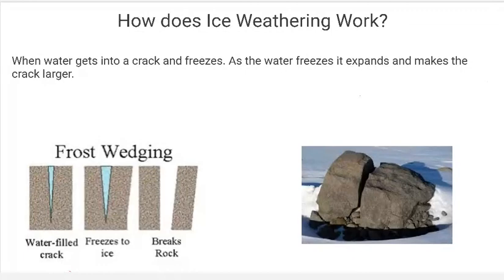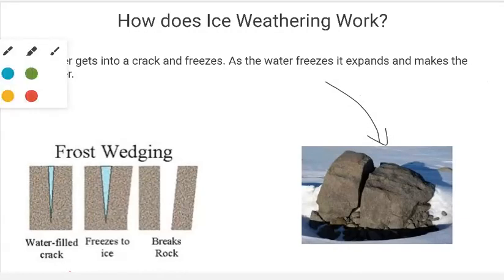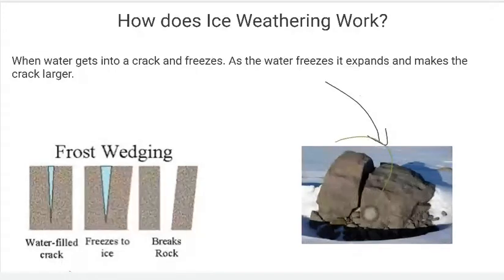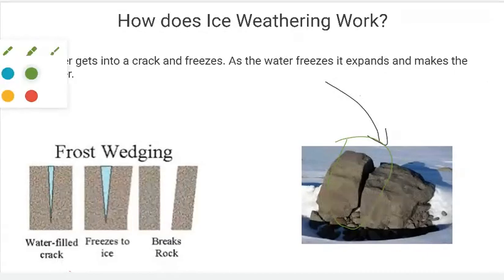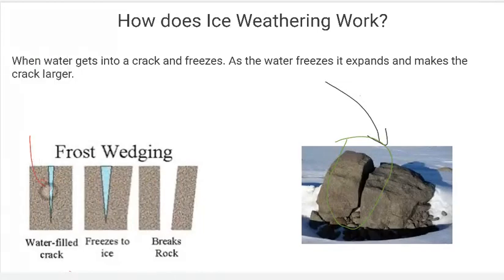If we look at this picture on the right, we see there's this huge crack in this rock. This rock was actually once one rock. But as you see, as I circle it in green, there is this huge crack in the middle. This is the result of frost wedging — not just one instance, but multiple instances of frost wedging. Frost wedging takes small cracks in rocks and expands them. We can see from this image on the left there's this small crack here, and I'm pointing to it in red.